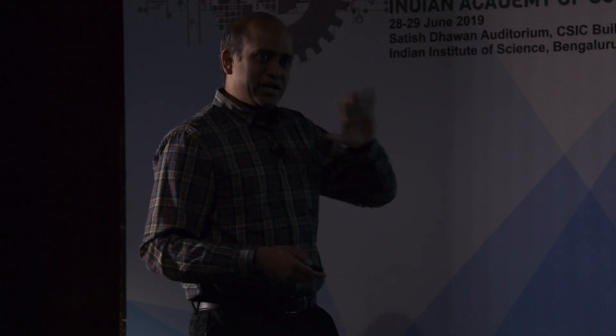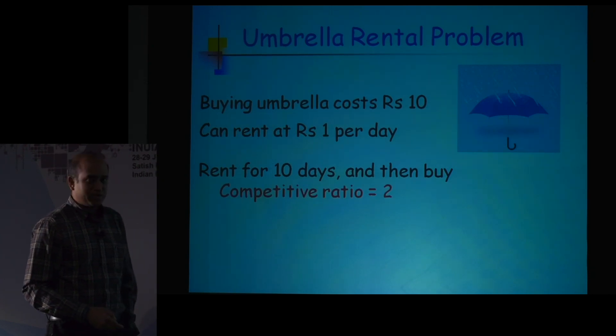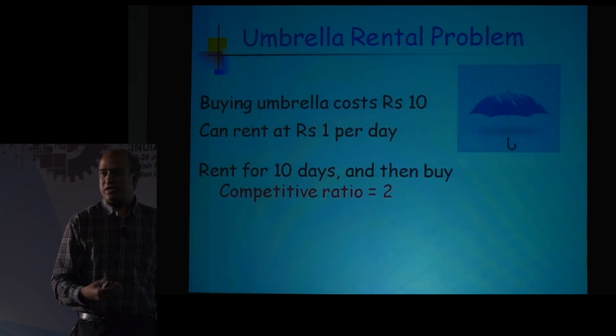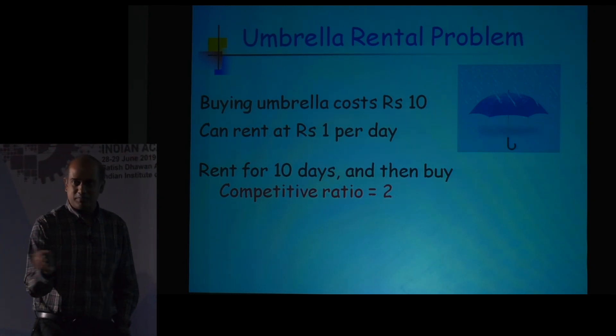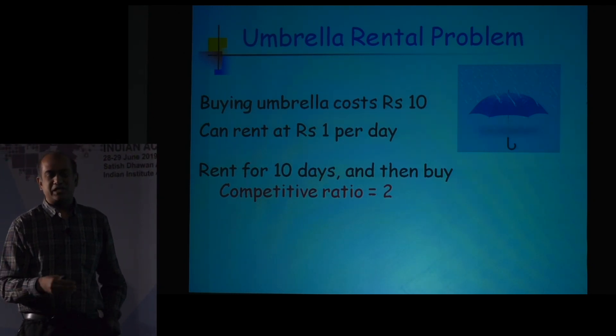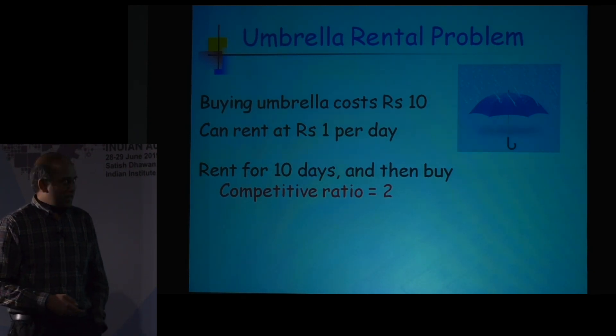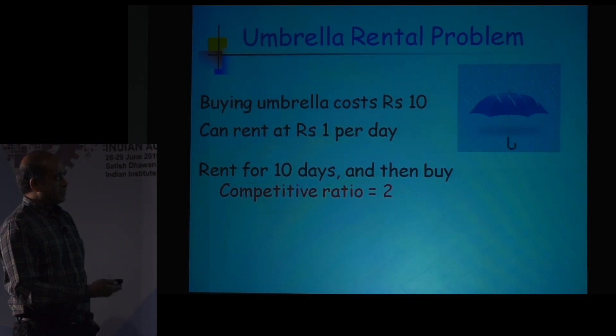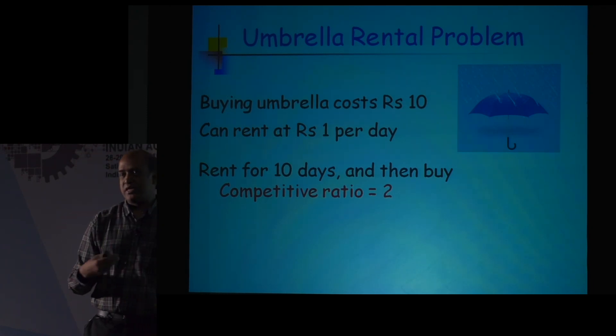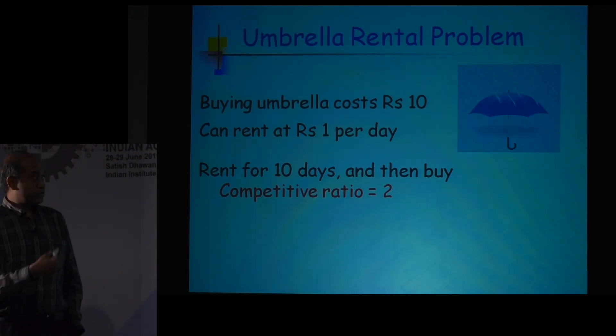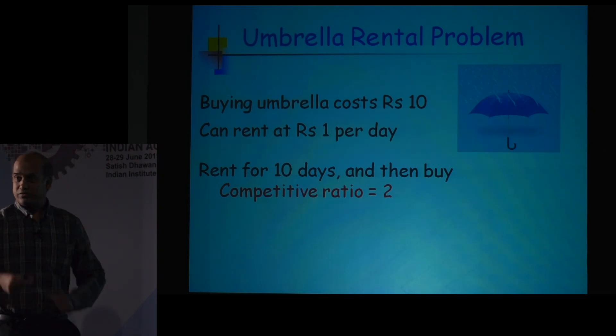This ratio will always be more than 1, and the closer it is to 1 the better you are. What is the optimal strategy? One very natural strategy is: since it costs 10 rupees to buy, I will rent for 10 days and then buy. You can show that the ratio will never be more than 2 — no matter what happens, you will never pay more than twice the optimal. So this strategy has a competitive ratio of 2, meaning you are paying 100% more than somebody who knew the future.